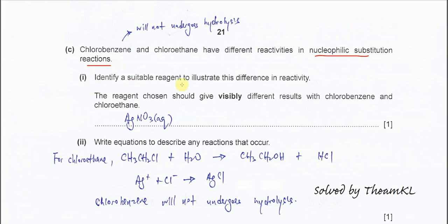Part one: Identify a suitable reagent to illustrate this difference in reactivity. The reagent chosen should give visibly different results with chlorobenzene and chloroethane. Silver nitrate. From what you learned in AS, hydrolysis of haloalkanes.